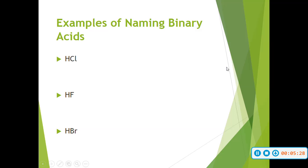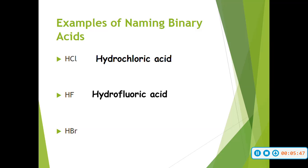Since this is a monatomic ion, the first one is going to be hydrochloric acid. Repeat these rules for the next ones: the second would be hydrofluoric acid, and lastly we would have hydrobromic acid.